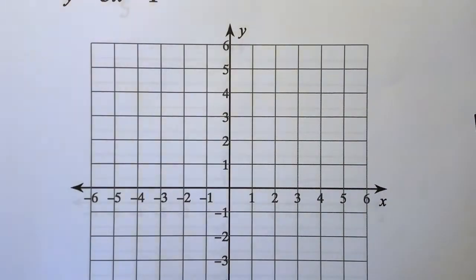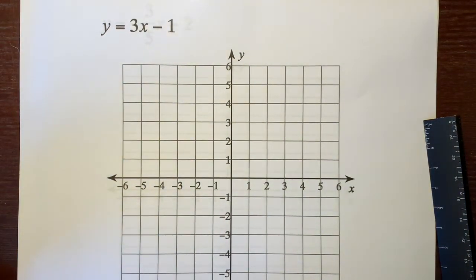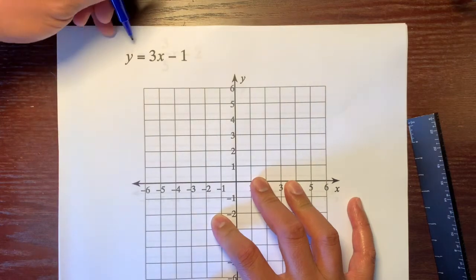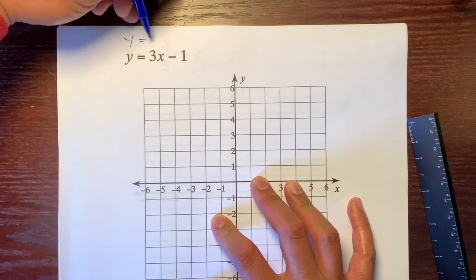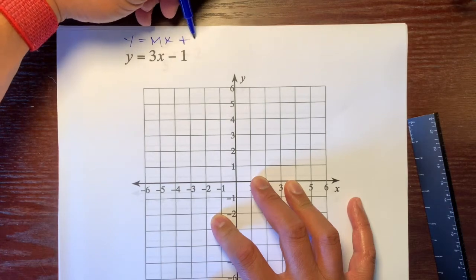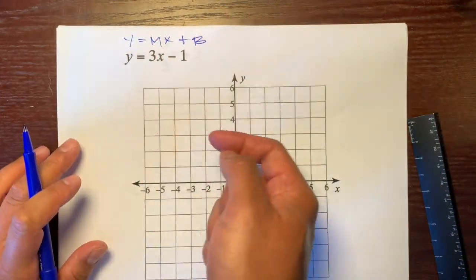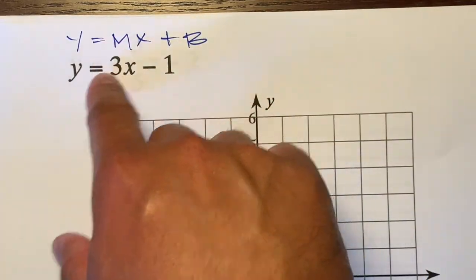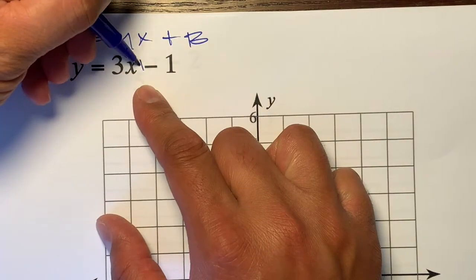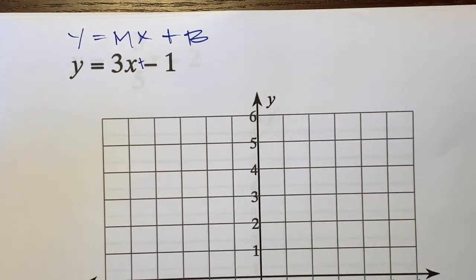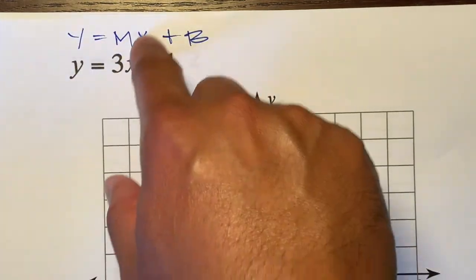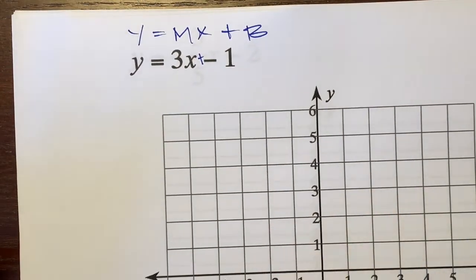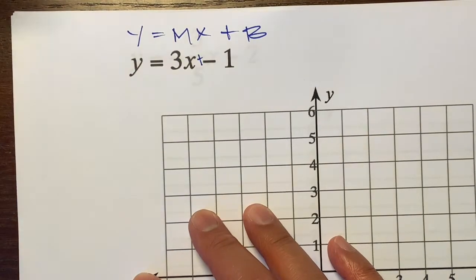Here's the first example: Y equals 3X minus 1. I'm going to write slope-intercept form over it — Y equals MX plus B — just so we can remember it. The Y is still Y, the X is still X, the M is 3, and the B is negative 1, written as plus negative 1.